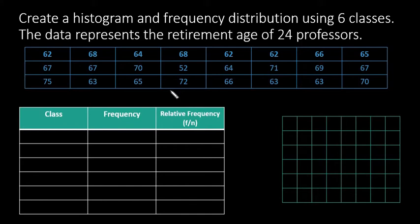The first thing I want to do is find my minimum and maximum values. My minimum value for this dataset is 52, my maximum value is 75.